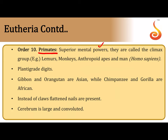The last and most evolved order, to which humans belong, is Primata — the climax group with superior mental powers. It includes lemurs, monkeys, and anthropoid apes such as gorillas, orangutans, and chimpanzees. Primates have plantigrade digits; gibbons and orangutans are Asian, while chimpanzees and gorillas are African. We have flattened nails (modified claws), a very large and highly convoluted cerebrum, attributing to our intelligence. In total, there are 10 orders of Class Mammalia.